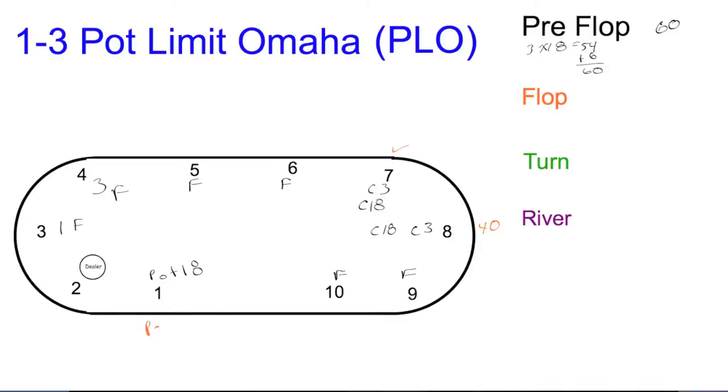This person's going to pot, make a pot bet. That pot bet's going to be 3 times 40—120 plus 60, which gives 180. That gets seat 7 to fold.